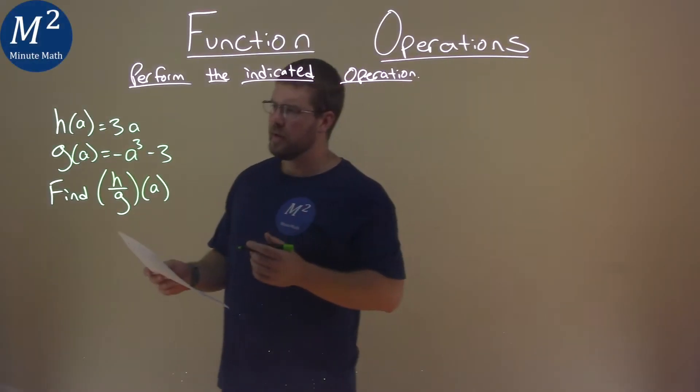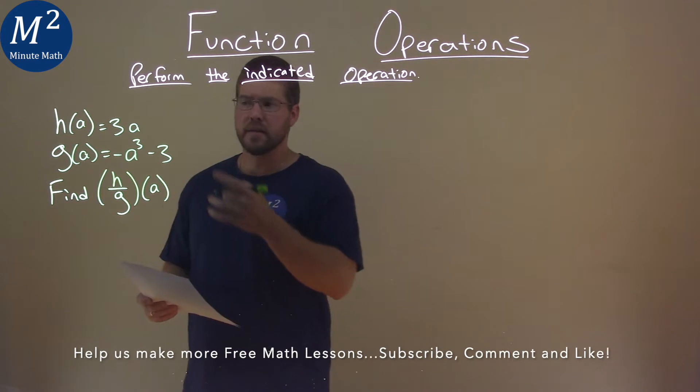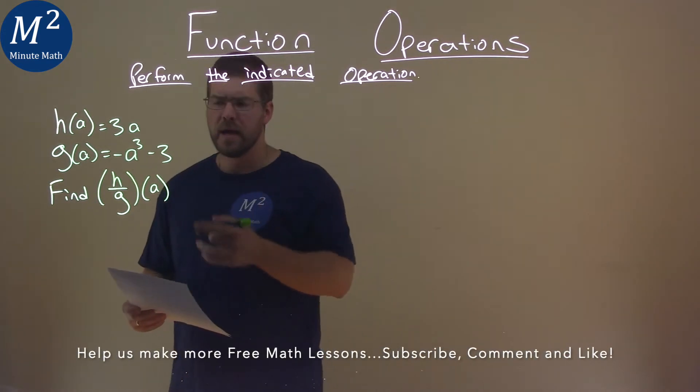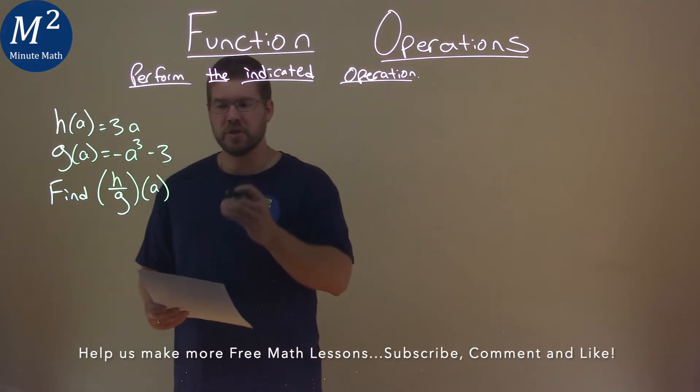We're given this problem right here. h of a is equal to 3a, g of a is equal to negative a to the third power minus 3, and we need to find h over g of a.